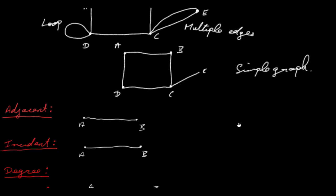We can also look at what's called the degree sequence of a graph. The degree sequence is obtained by listing the vertex degrees in increasing order, with repeats if necessary — so you start with the smallest degree and work your way up to the highest degree vertex.